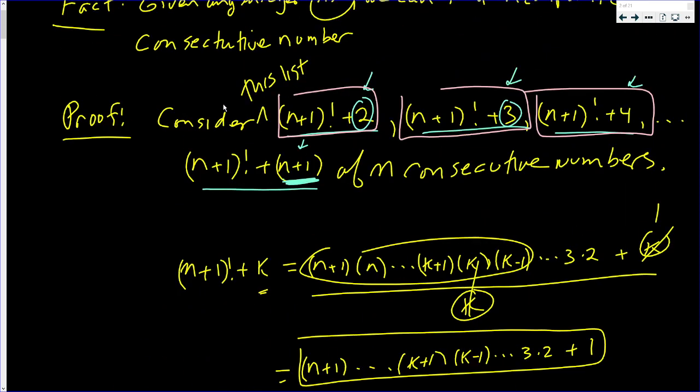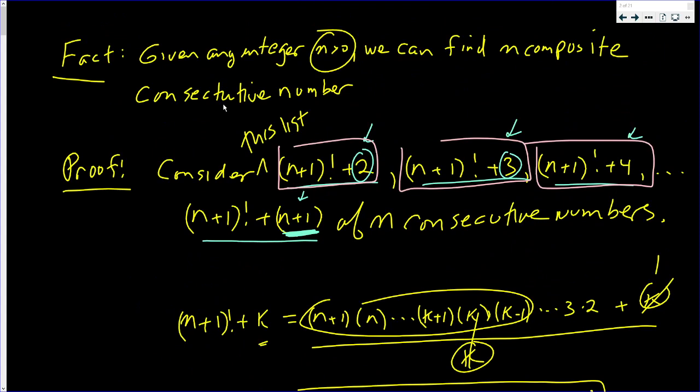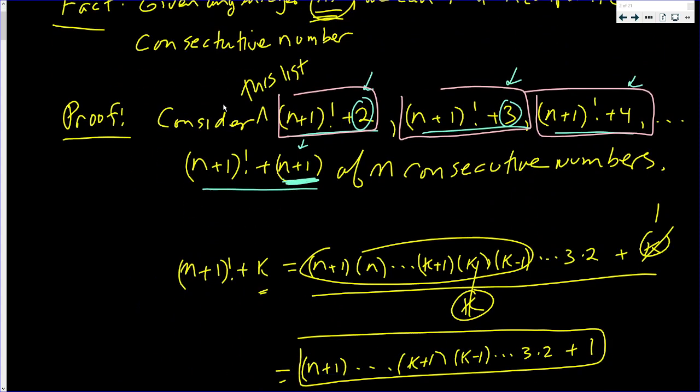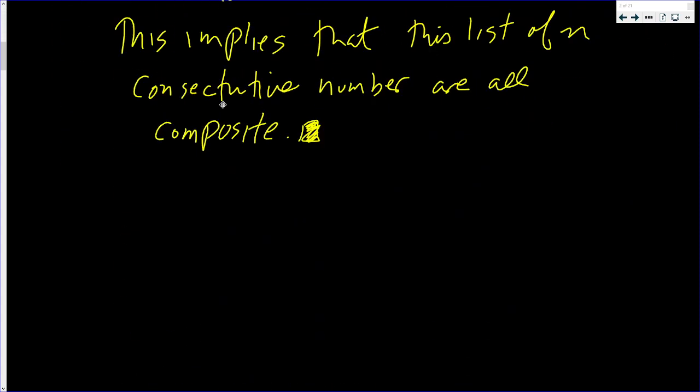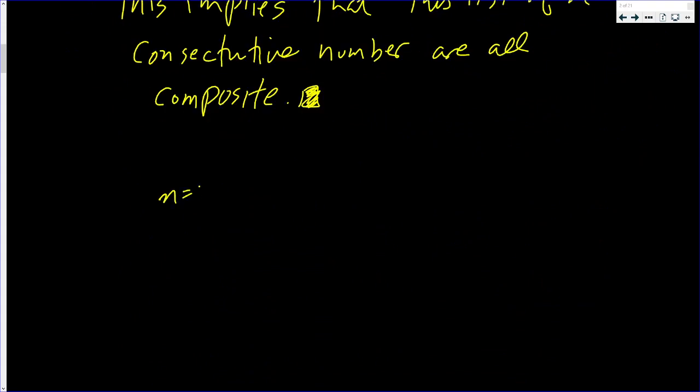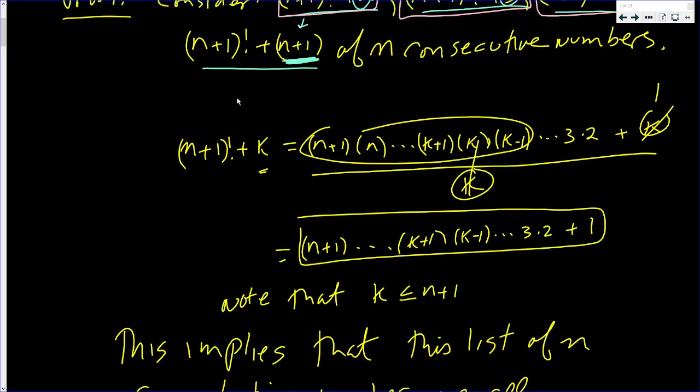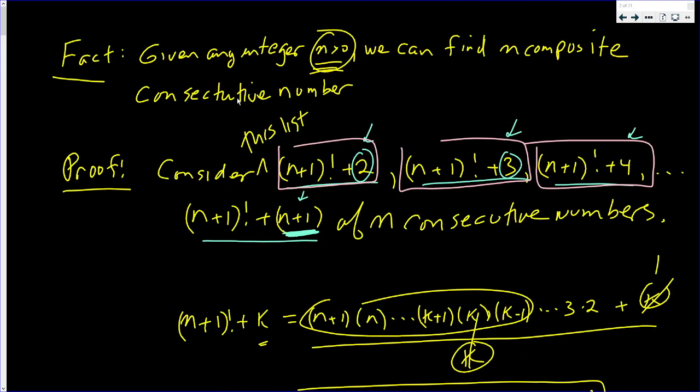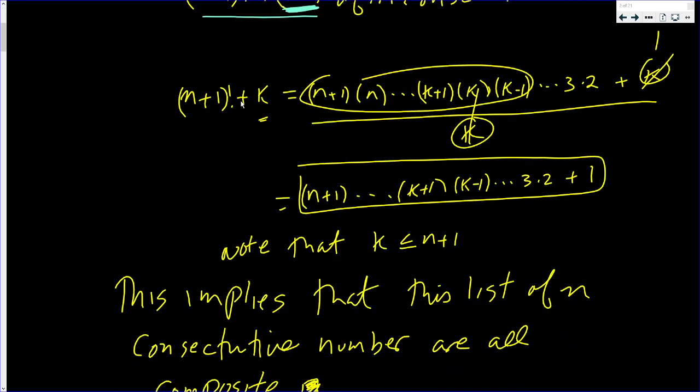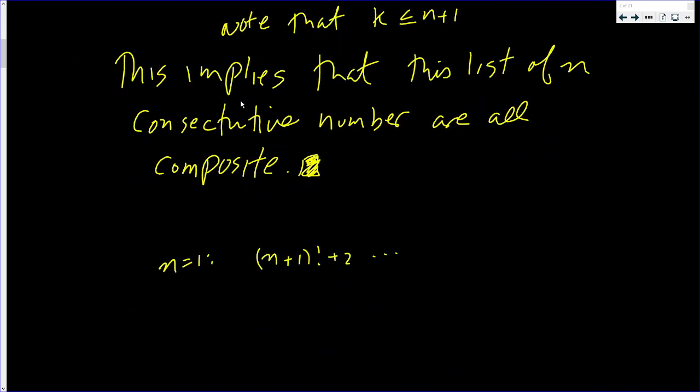Keep in mind that this was true for any n bigger than 0. So what if n was 1? Let's just look at that. So we've been having (n+1)! + 2. Oh, n was bigger than 1. That's what it should say. n is bigger than 1. Sorry.